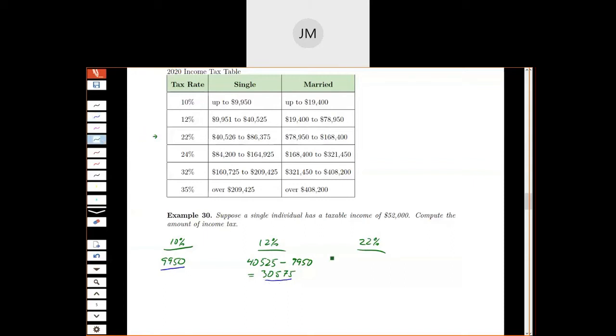Now this final 22% bucket goes up to $86,375, but I didn't make that much money, so I don't need to use that number for anything.